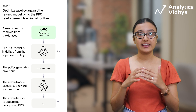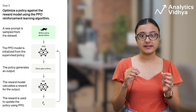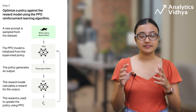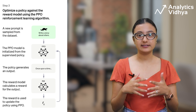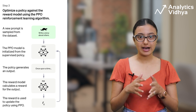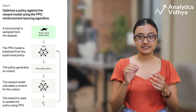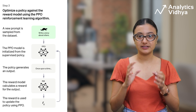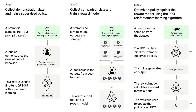The third phase is learning the optimal policy. The environment presents a random customer prompt and expects a response. Given the prompt and response, it produces a reward determined by the reward model. The RM is used as a reward function to fine-tune the SFT policy and maximize reward using the PPO algorithm.